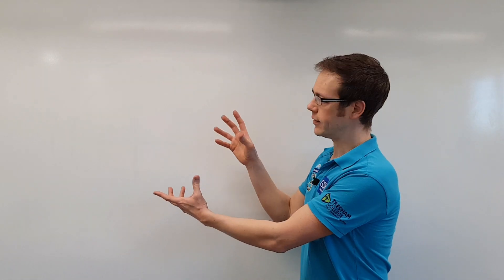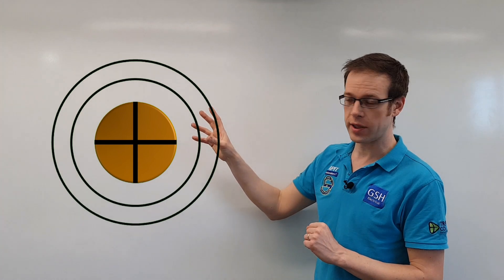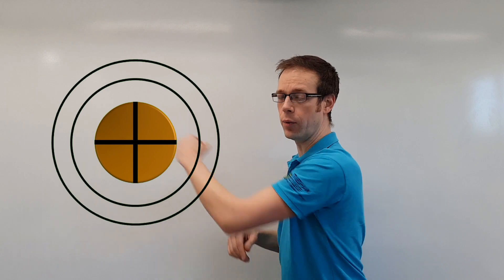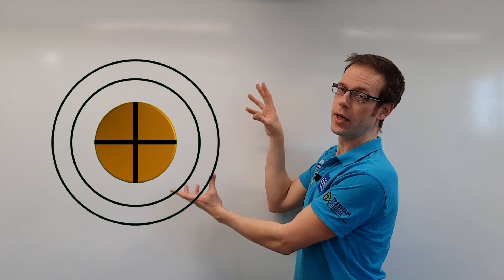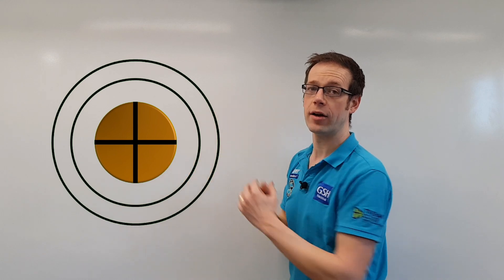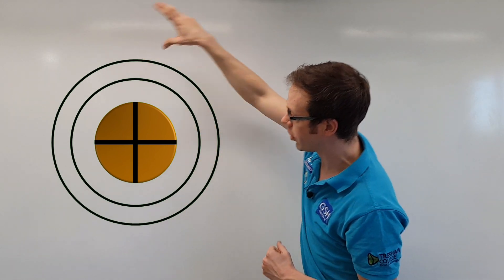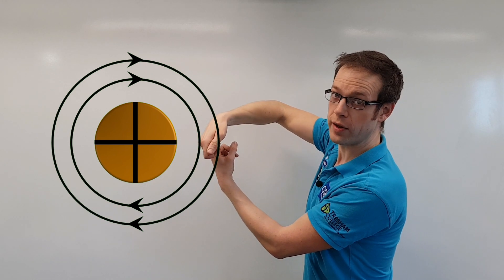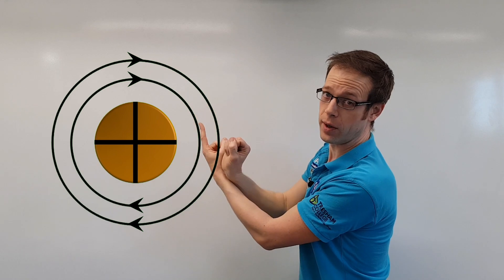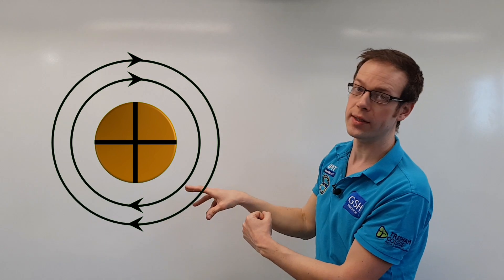Now let's consider what our magnetic field looks like. We've already said the magnetic field will be circular. Here we have the cross section of a conductor with a cross, so the current is flowing away from you into the screen, and that generates a circular magnetic field around the conductor. That circular magnetic field has one very important quality: while it doesn't have a north and a south pole, the lines of magnetic flux still have a direction — and that direction, when current is flowing away from you, is clockwise. To help remember this, let's turn the cross in the conductor into the head of a screw: if you want to turn that screw so it goes away from you into the wall, you would turn it clockwise. Therefore, when current is going away from you, it has a clockwise magnetic field.